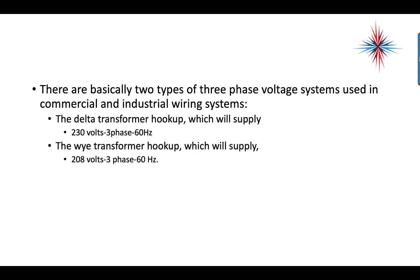There are basically two types of three-phase voltage systems used in commercial and industrial wiring. The delta transformer hookup, which supplies 230 volts, three-phase, 60 hertz, and the Y transformer hookup, which supplies 208 volts, three-phase, 60 hertz.